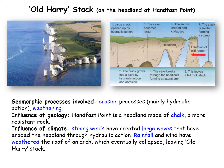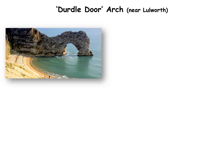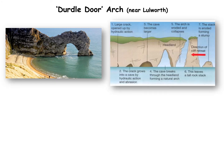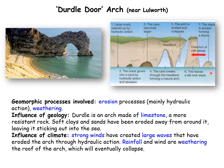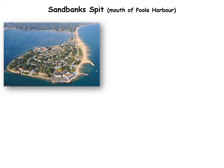Here is another landform: an arch called Durdle Door. The arch formed because a crack eroded into a cave, which then punctured through the headland. The processes involved are erosion and weathering. In terms of geology, Durdle Door is made of limestone, a more resistant rock. The influence of climate is that strong winds create large waves driving erosion, while rainfall and wind help weather the roof of the arch.